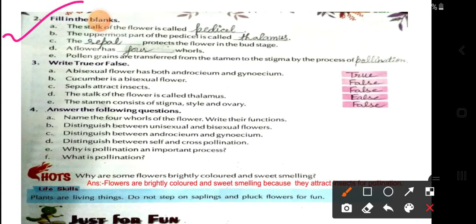Question 2: Fill in the blanks. A — the stalk of the flower is called the peduncle. B — the uppermost part of the peduncle is called the thalamus. C — sepals protect the flower in the bud state. D — a flower has four whorls. E — pollen grains are transferred from the anther to the stigma by the process of pollination.